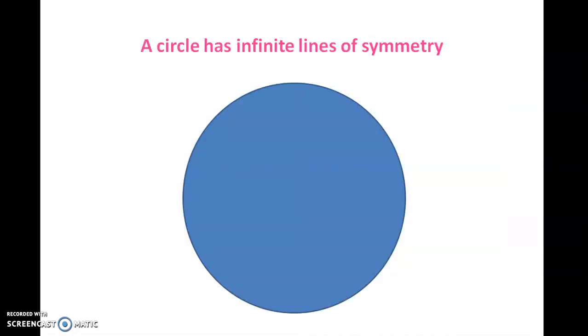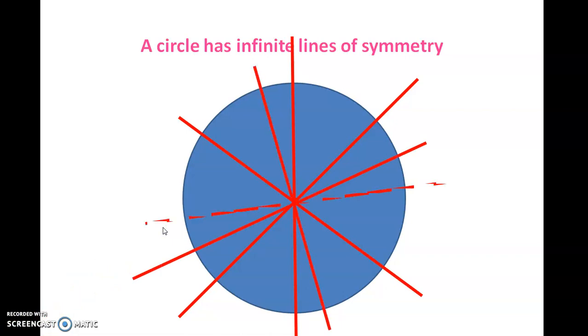A circle has infinite lines of symmetry. Like more lines we can draw in circle.